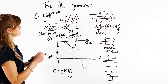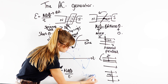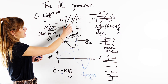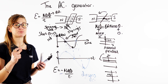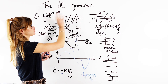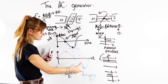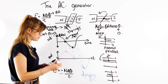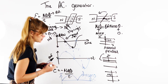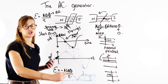A dynamo uses DC current instead. Rather than slip rings, it uses a split-ring commutator. Every half turn it switches the poles, reversing the direction. So instead of an EMF going from positive to negative, all the negative values are kept positive, giving a direct current output rather than an alternating one.